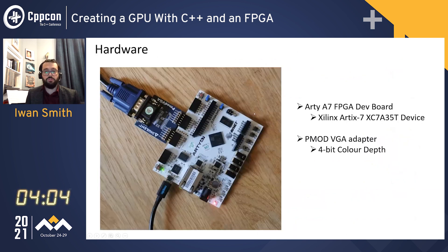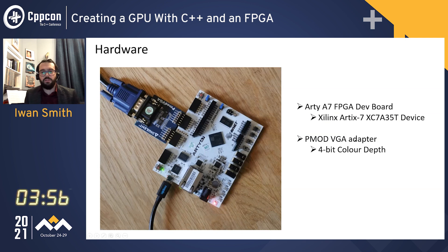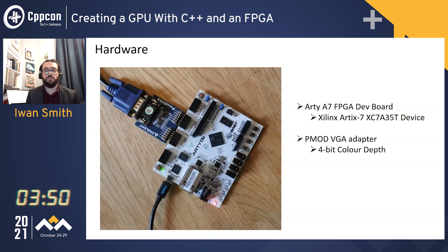To create this GPU, I'm going to use the RTA7 FPGA development board and plug that into a VGA adapter. The VGA adapter contains three digital to analogue converters, which take four binary inputs and use a resistor ladder to convert that into an analogue signal. So it's an incredibly simple device, the VGA adapter.